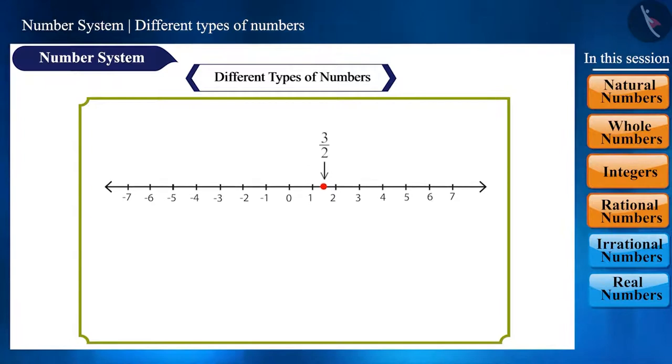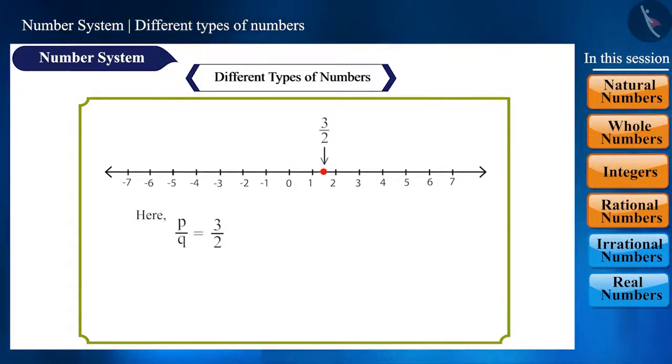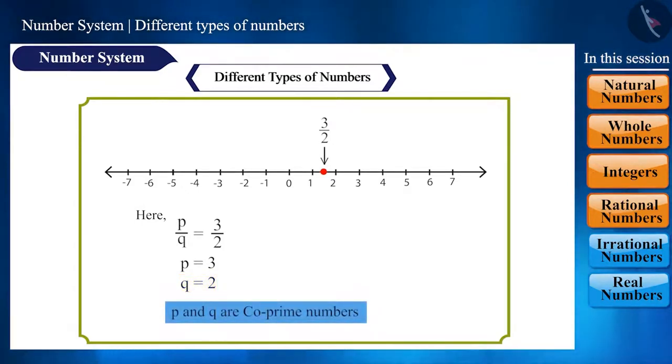And so, when we represent p by q on the number line, we assume that q is not equal to 0 and p and q have no common factor other than 1. That is, p and q are co-prime numbers.